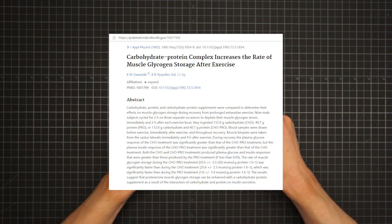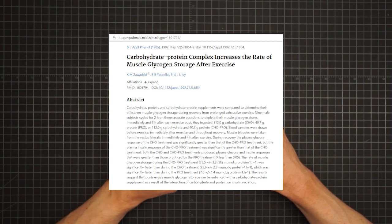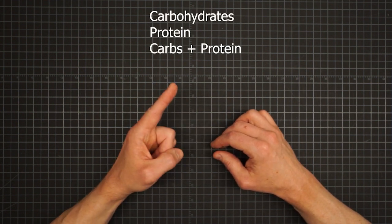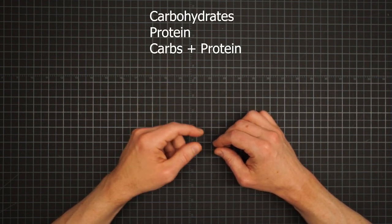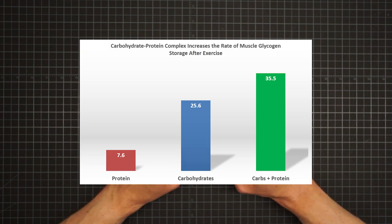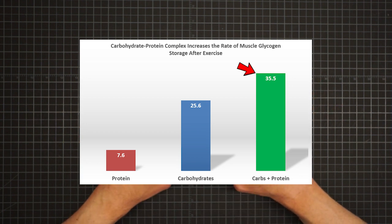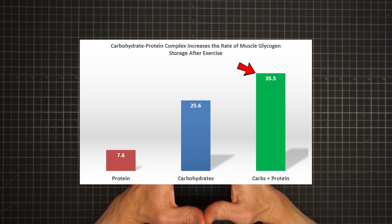In another study published in the Journal of Applied Physiology, nine male subjects cycled until their muscle glycogen stores were depleted. And for recovery, they were given one of three formulas: carbohydrates, protein, or both. The results were that the carb-protein mix gave a greater rate of muscle glycogen storage than either the carb or the protein treatments individually. In fact, it was greater than the other two combined.